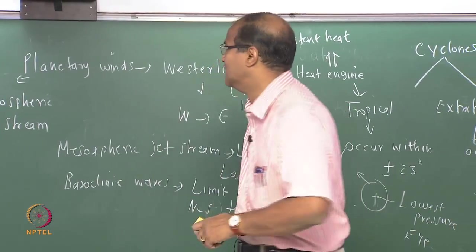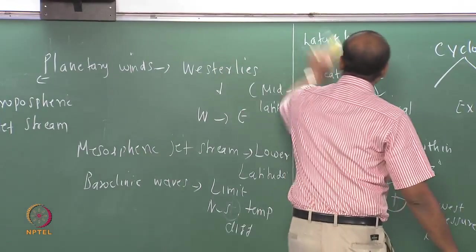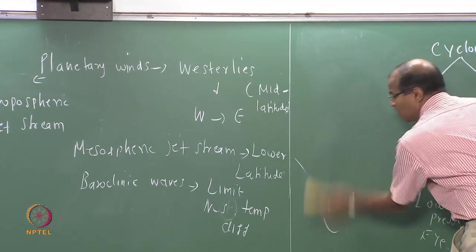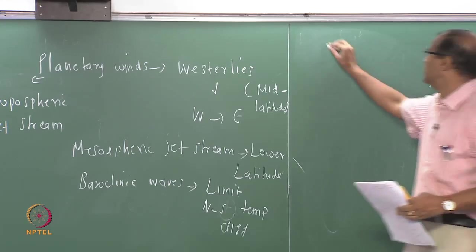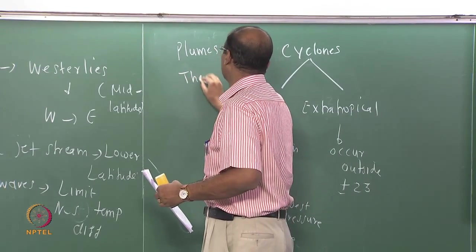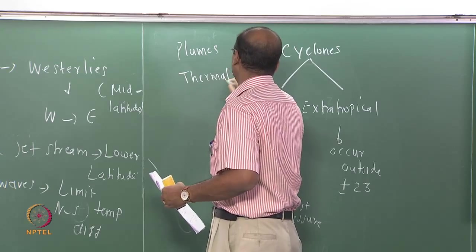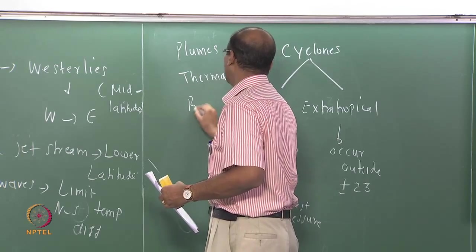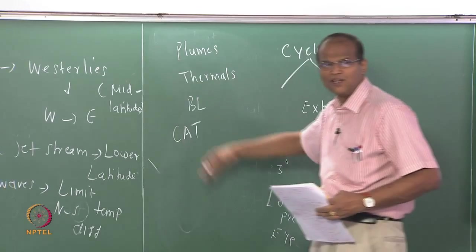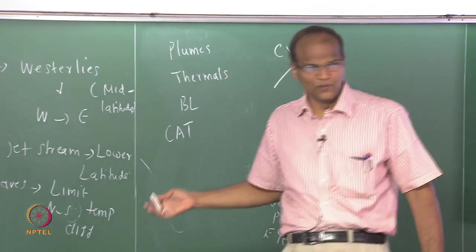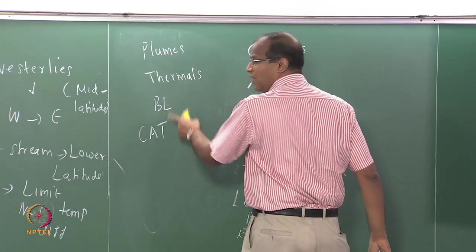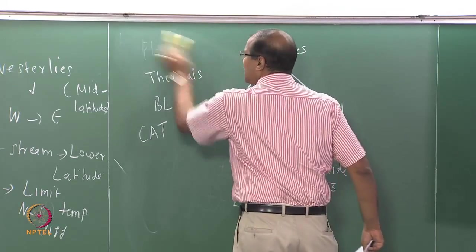Now, winds and pressure. At smaller scales there are plumes, thermals, boundary layer, and clear air turbulence — these are all associated with winds. Isobars are lines joining points of equal pressure. For example, 1000 millibar, 980 millibar, with the center around 969 millibar. From Bernoulli's equation, the greater the pressure difference, the stronger the winds.